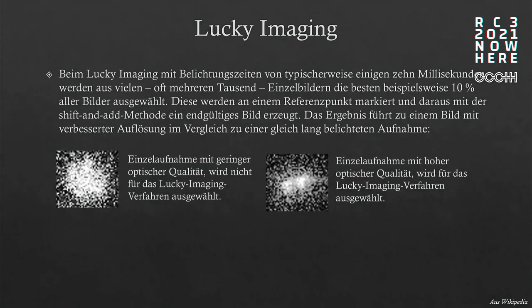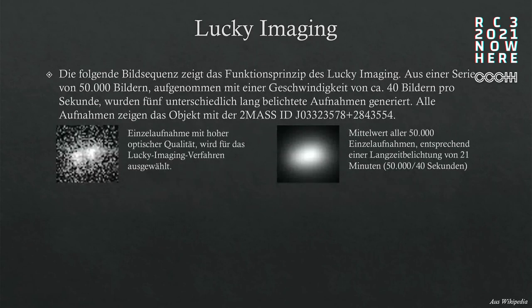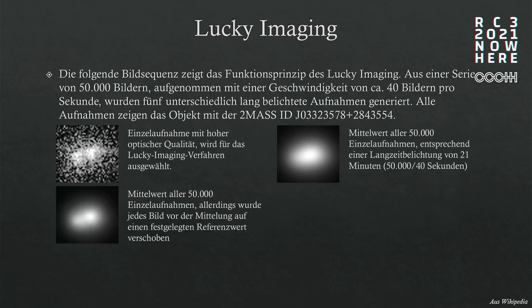You film something and then you take the best images. On the left you have just a single image with lower quality, and on the right you see an image which is much better. You're not only doing it with one but with multiple — you stack them and build an average. On the right there's the average of 50,000 images, which is about 21 minutes of collecting light and watching. That's one object on the sky.